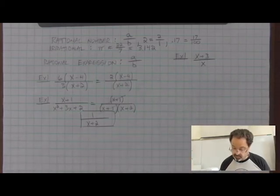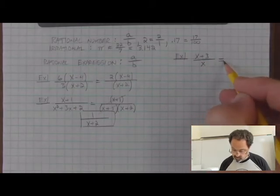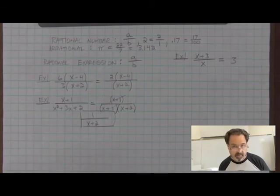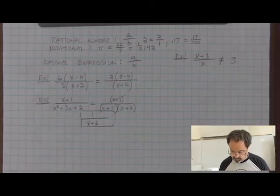When we work with rational expressions, we tend to want to factor and cancel. Looking at this, we might make a mistake and cancel out the x's and leave three and be happy with it. But we've made a mistake. That doesn't work.